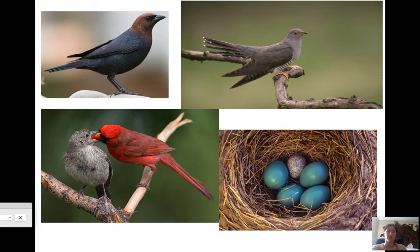Here are some pictures: a brown-headed cowbird on the left, a cuckoo on the right, a cardinal feeding a brown-headed cowbird chick that is twice the size of the adult cardinal — showing what a stress that is on the parent — and a robin's nest with a brown-headed cowbird egg inside.